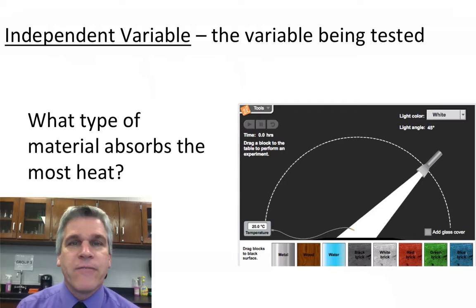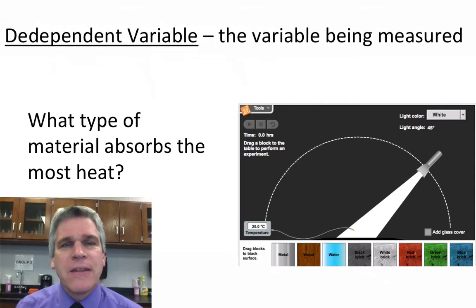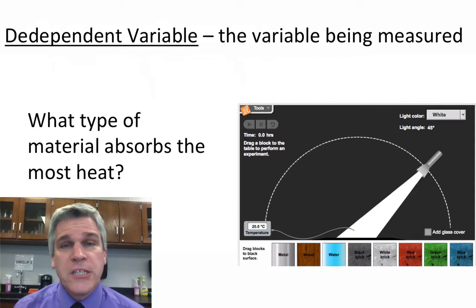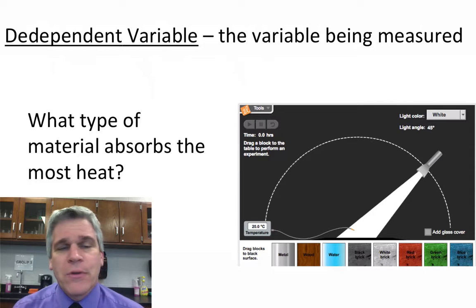That's going to become my independent variable. My dependent variable is the variable being measured. So how do I know which one absorbs the most heat? What information am I going to use to determine that? Well, this is a pretty simple one. Of course, I'm going to use temperature. And so in this example, I will be measuring the temperature of the substance after so many hours.